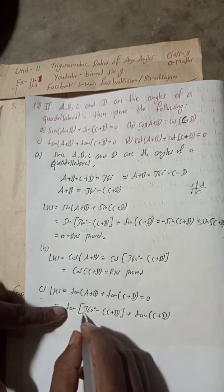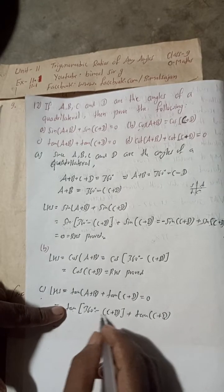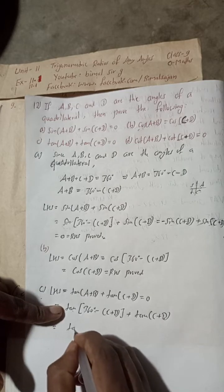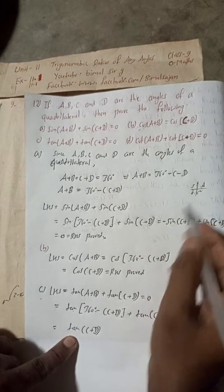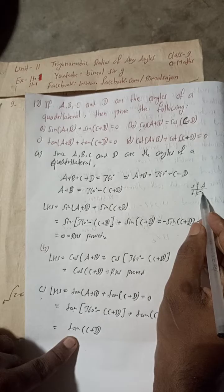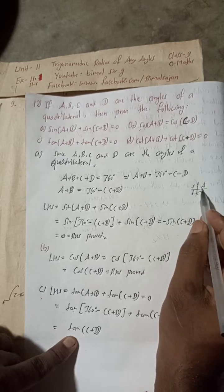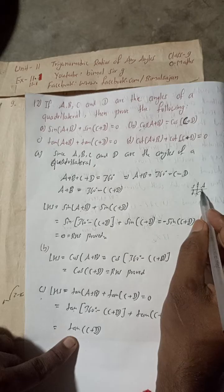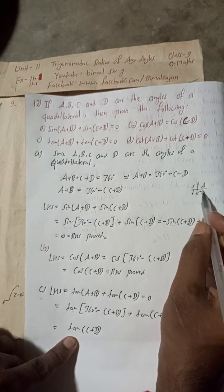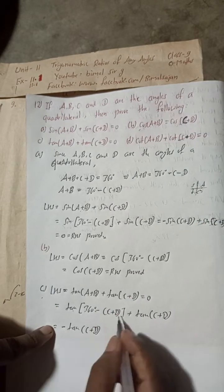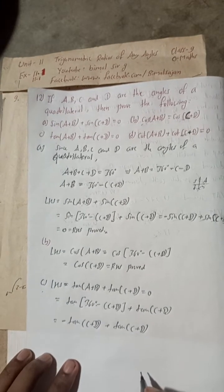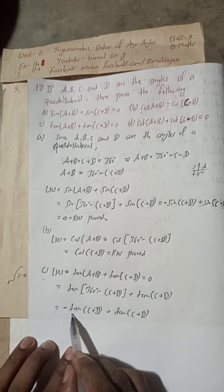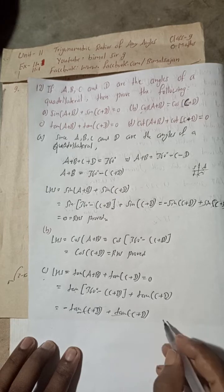For tan(360° − θ): the CAST rule tells us this is in the fourth quadrant, where only cos is positive and tan is negative. So tan(360° − (C+D)) = −tan(C+D). Therefore LHS = −tan(C+D) + tan(C+D) = 0 = RHS. Proved.